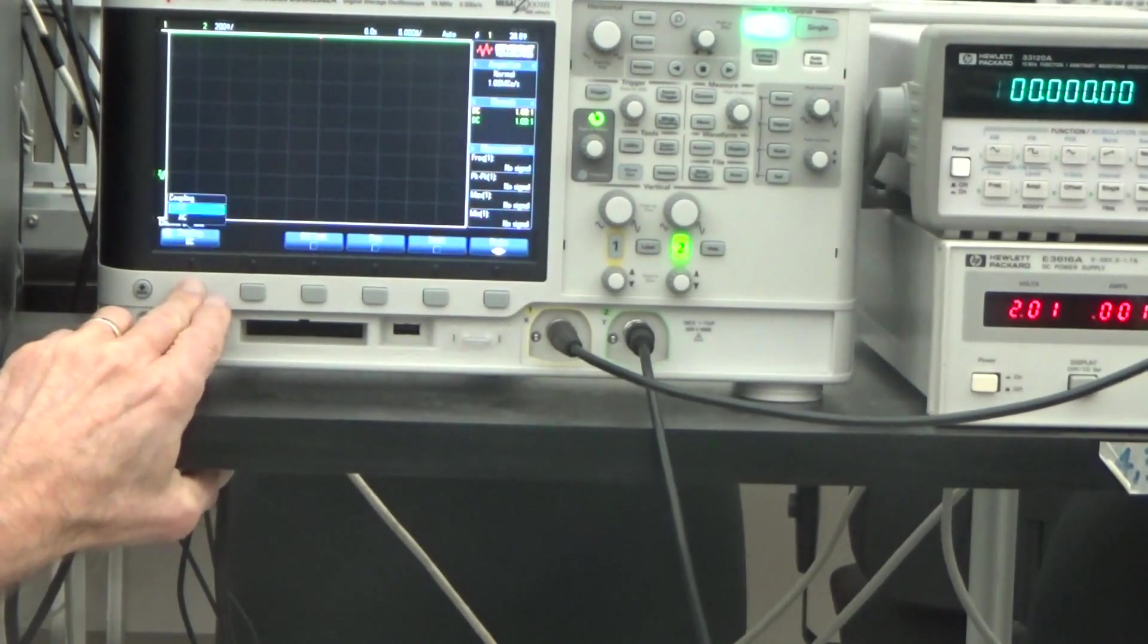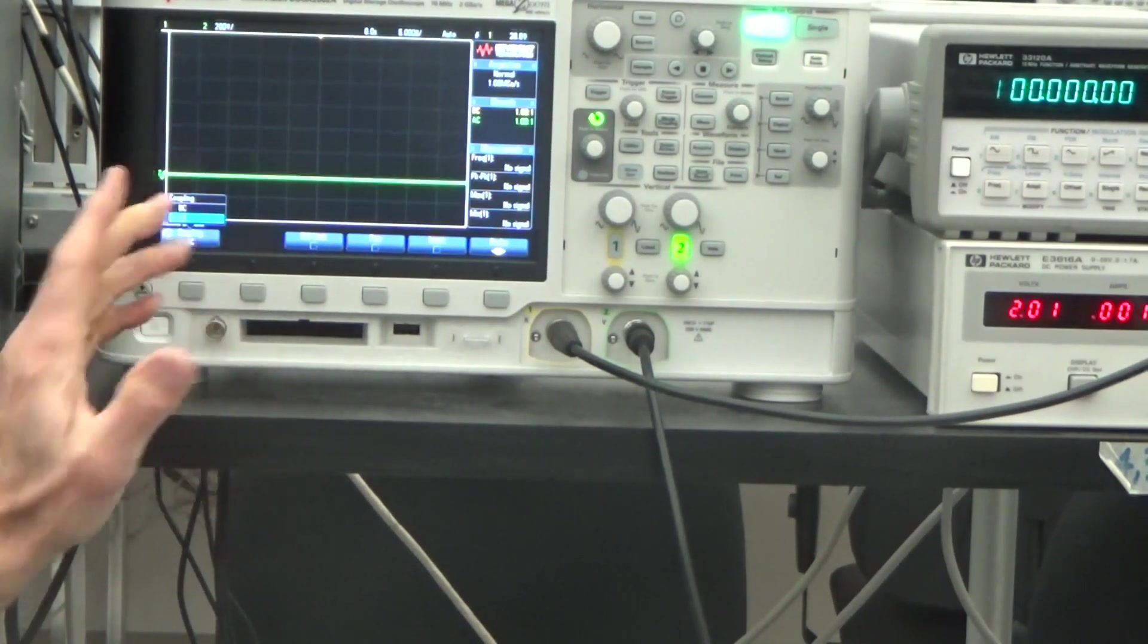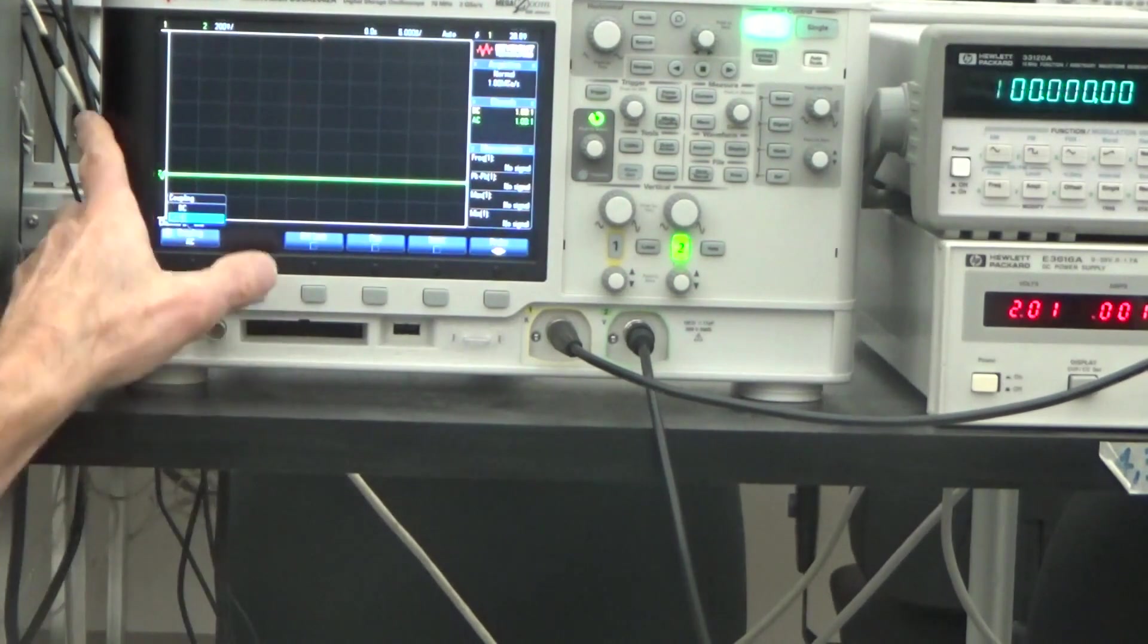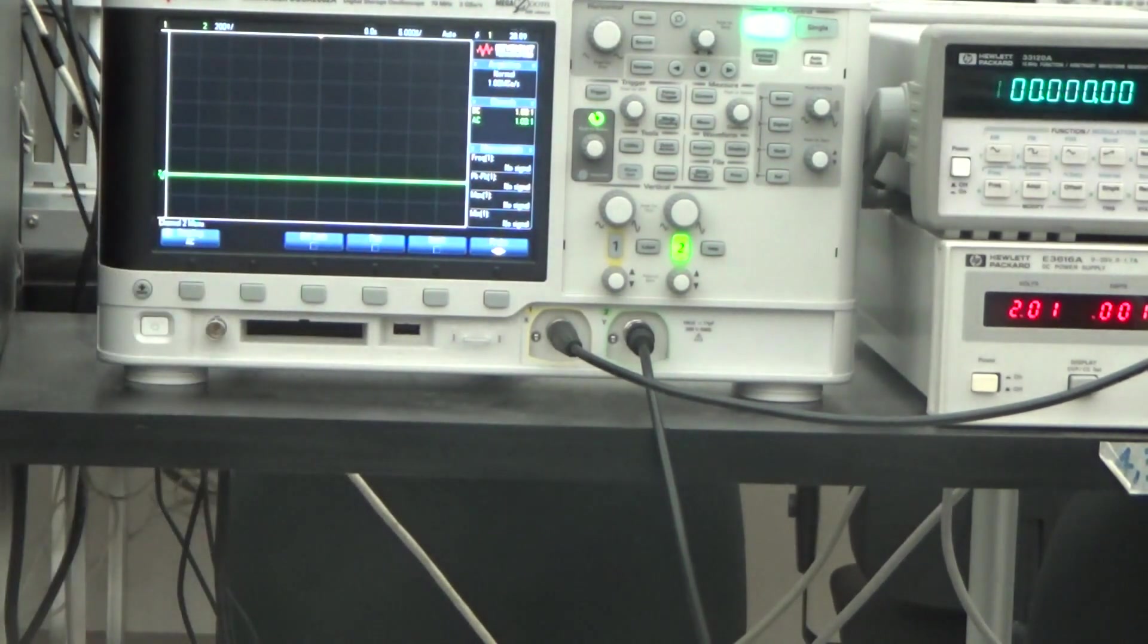But what I'm going to do is I'm going to ask for it to be AC. So as soon as we go to AC coupling, the DC level of the output of the power supply is blocked. And so you can see that right now it's sitting at zero.